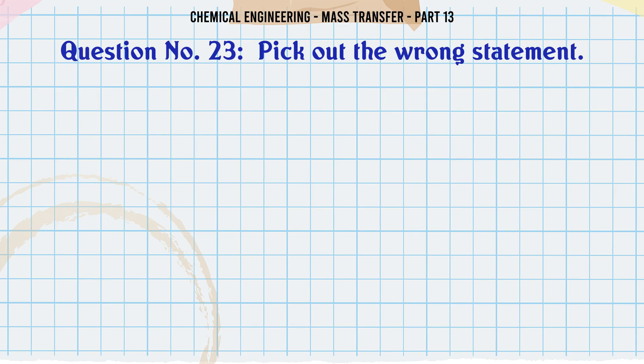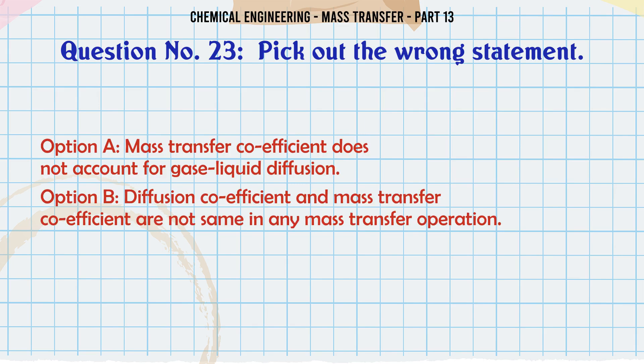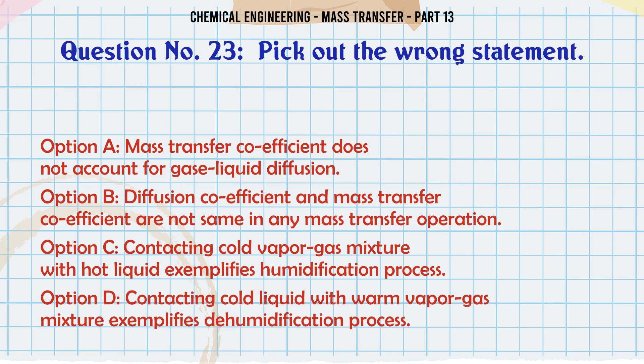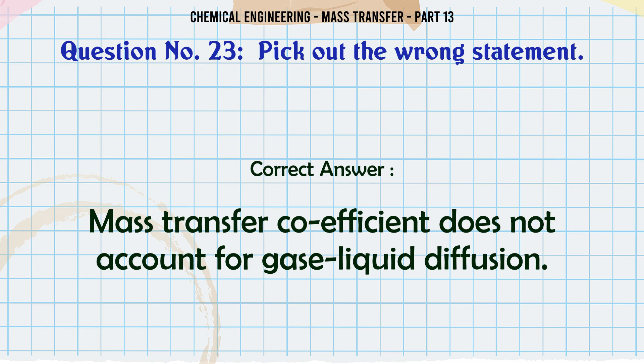Pick out the wrong statement: A. Mass transfer coefficient does not account for gas-liquid diffusion. B. Diffusion coefficient and mass transfer coefficient are not the same in any mass transfer operation. C. Contacting cold vapor-gas mixture with hot liquid exemplifies humidification process. D. Contacting cold liquid with warm vapor-gas mixture exemplifies dehumidification process. The correct answer is: Mass transfer coefficient does not account for gas-liquid diffusion.